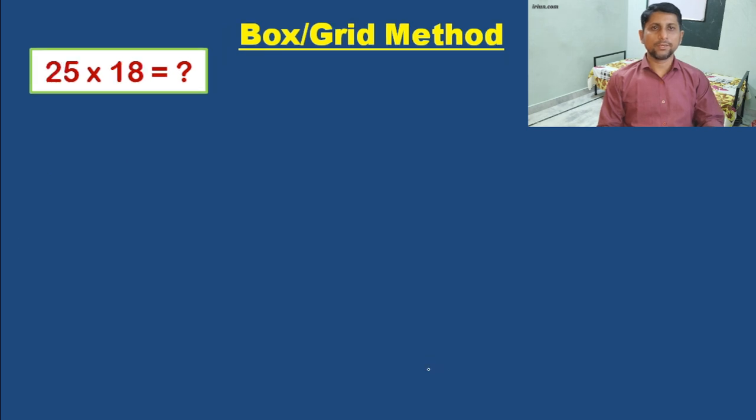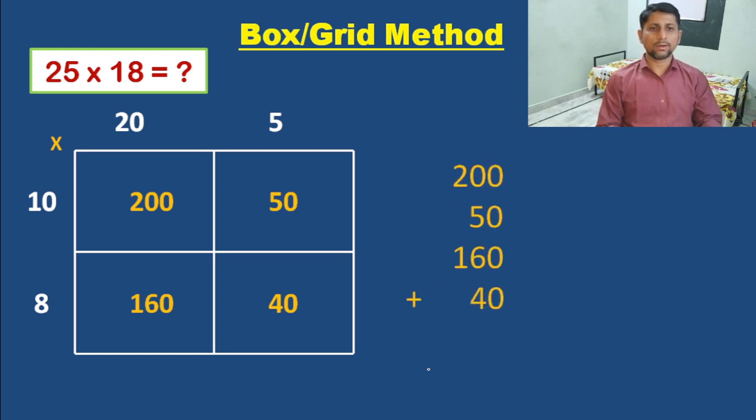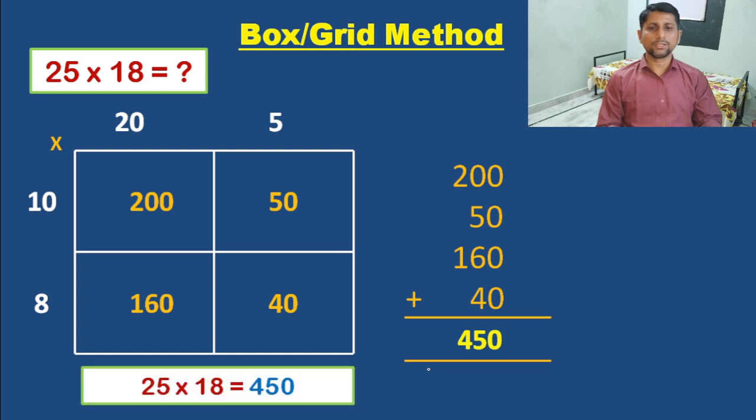Let's see another example: 25 into 18. 25 is a two-digit number, meaning two columns, and 18 is also a two-digit number, so two rows. Partition the numbers: 25 as 20 and 5, write on the top row. 18 as 10 and 8 on the left or right side. Multiply each number in the column by each number in row. 10 into 20 equals 200, 10 into 5 equals 50, 8 into 20 equals 160, and 8 into 5 equals 40. Add the numbers in the boxes: 200, 50, 160, and 40. We will get the answer 450. So multiplication of 25 and 18 gives product 450.